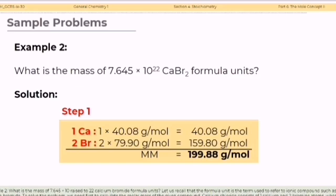For example number 2: What is the mass of 7.645 times 10 raised to the power of 22 calcium bromide formula units? Let us recall that the formula unit is the term used to refer to ionic compounds, such as calcium bromide. To solve the problem, we need first to calculate the molar mass of the given compound.